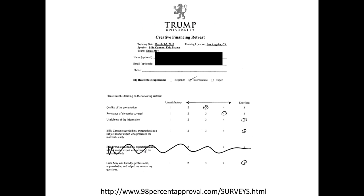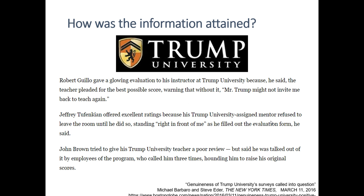One of the ways Trump University has defended itself is by saying that 98% of all the individuals who completed satisfaction surveys at the end of Trump University events were actually satisfied with the experience. If you go to 98percentapproval.com, you can download hundreds of megabytes of PDFs of anonymized event satisfaction sheets. There are literally hundreds upon hundreds of pages of these, and in aggregate, Trump University claims that 98% of people were happy.